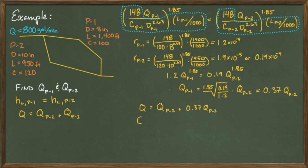We plug this equation back into our original continuity equation where Q is equal to Qp2 divided by 1 plus 0.37. And that gives us 584 gallons per minute.